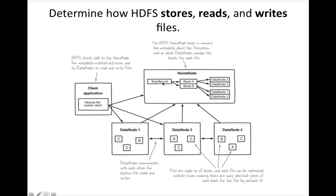For example, a file has two blocks: block A and block B. The name node determines that block A should go to data node 2 and data node 3, and block B should go to data node 1 and data node 3. That information is passed back to the client from where the 'hadoop fs -put' command is run. The client then writes block A to nodes 2 and 3, and block B to nodes 1 and 3. There are other blocks from other files — C and D — stored across the cluster as well. That is how data is stored.